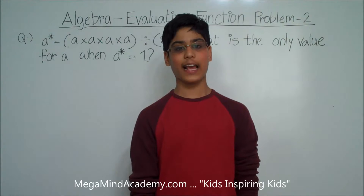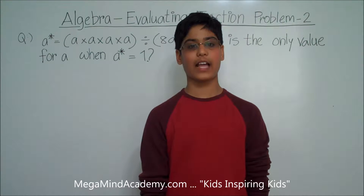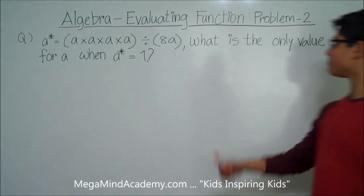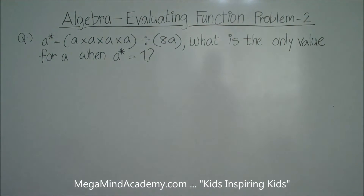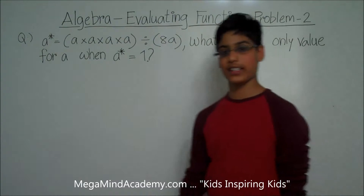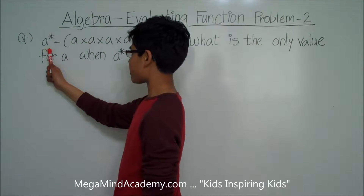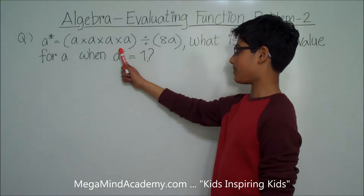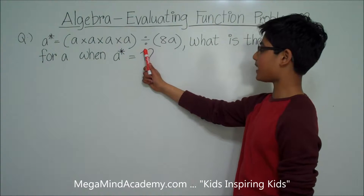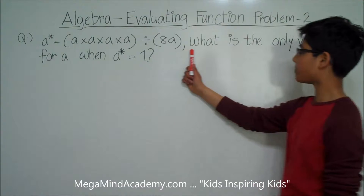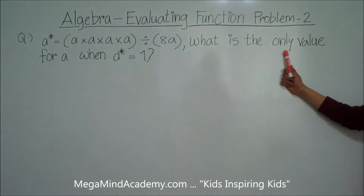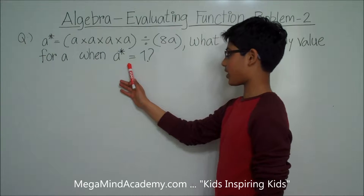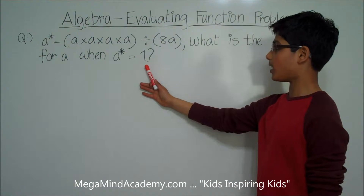Hi! Today we're going to learn about algebra, evaluating function problems. Let's say we have a problem like: a asterisk is equal to a times a times a times a divided by 8a. What is the only value for a when a asterisk is equal to 1?